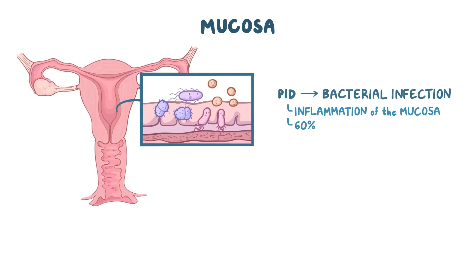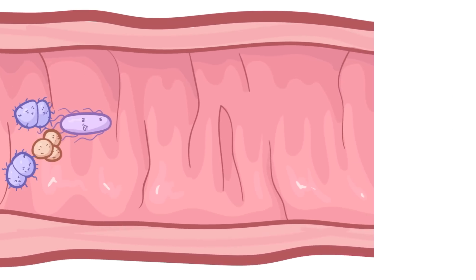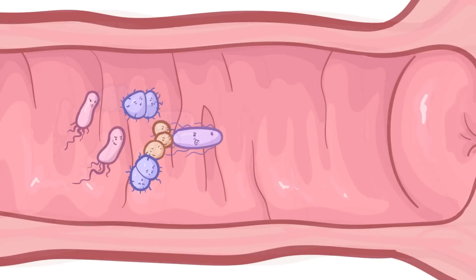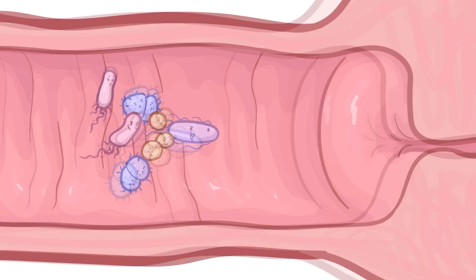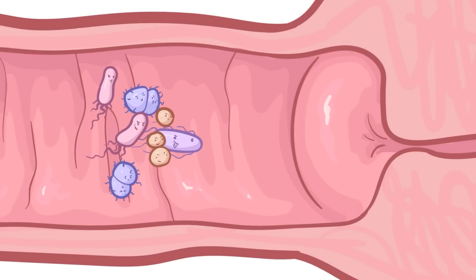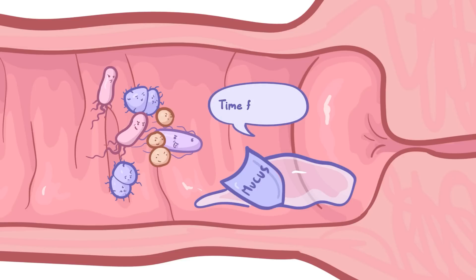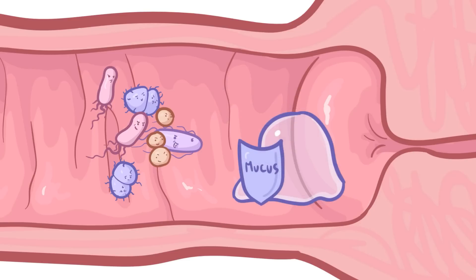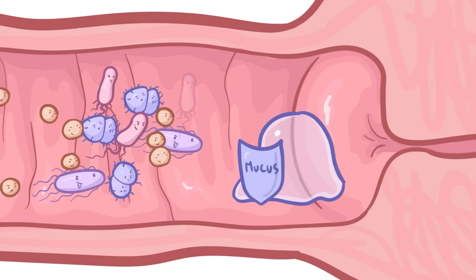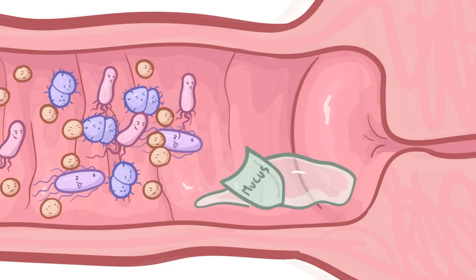About 60% of the time, this changes the composition of the bacterial flora in the vagina, also called bacterial vaginosis. Because the reproductive tract is essentially one long tunnel that starts at the ovaries and ends at the external sex organs, the infection can travel up that tract pretty easily. The cervical mucus, which normally acts as a barrier preventing bacteria from entering the uterus, can become less effective — either due to normal variations throughout the menstrual cycle, or in the context of bacterial vaginosis, when anaerobic bacteria proliferate and degrade the cervical mucus.